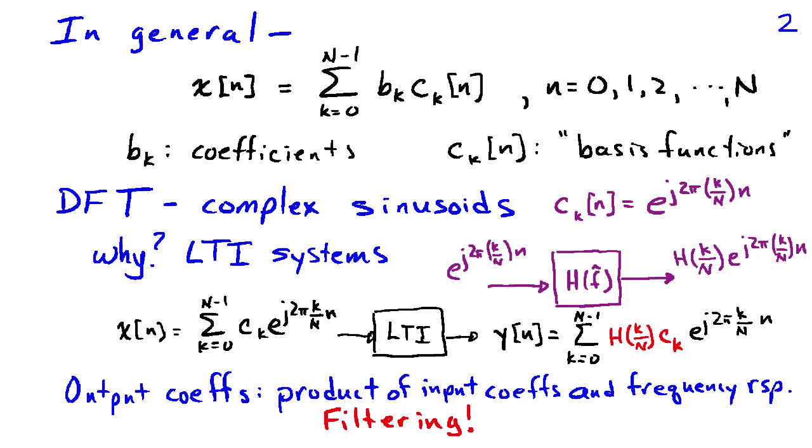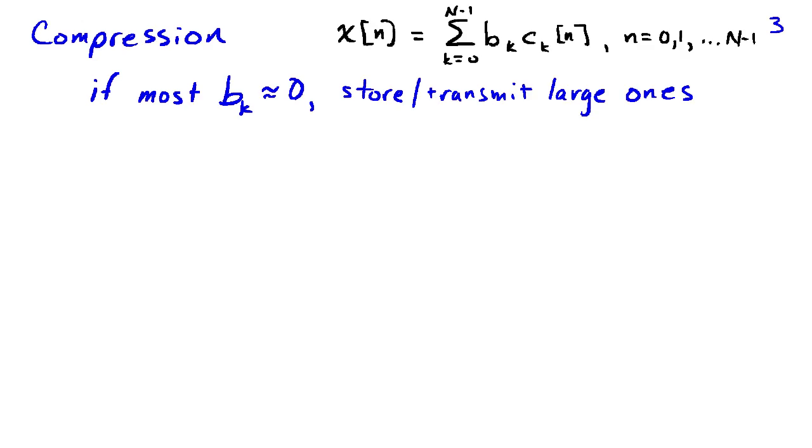This leads to the important notion of filtering, because we can think of filtering as a multiplication effect in the frequency domain. So if our goal is to interact with linear time invariant systems, then the discrete Fourier transform has some very significant advantages because of this conversion to multiplication at the output.